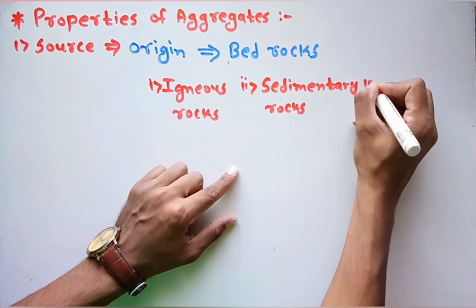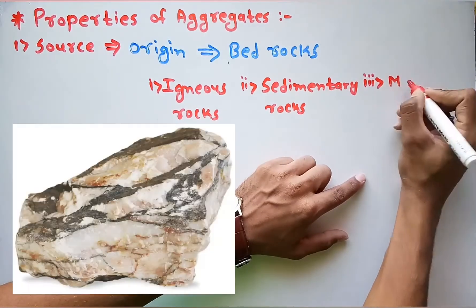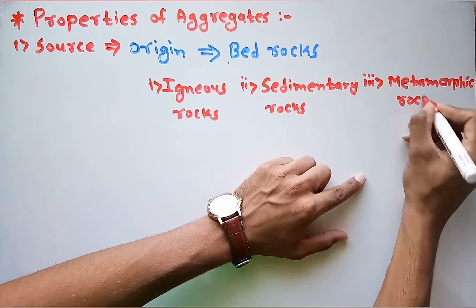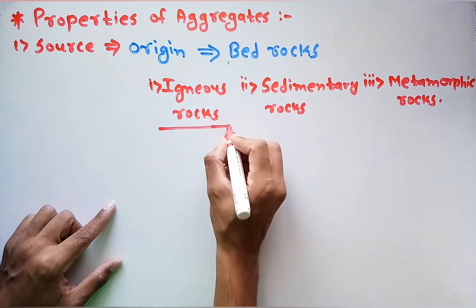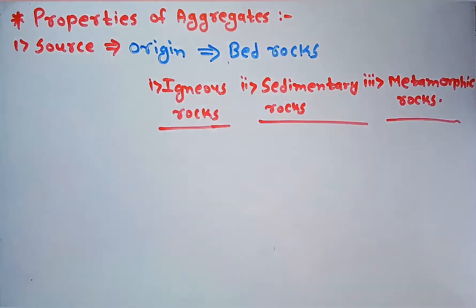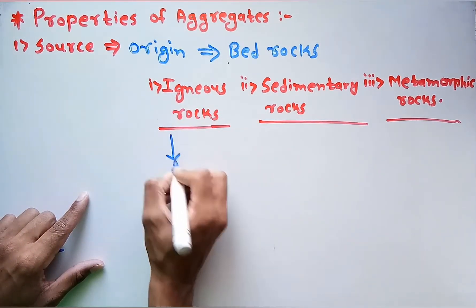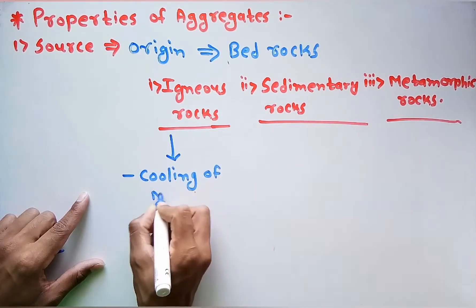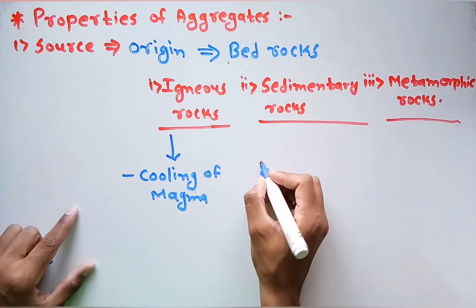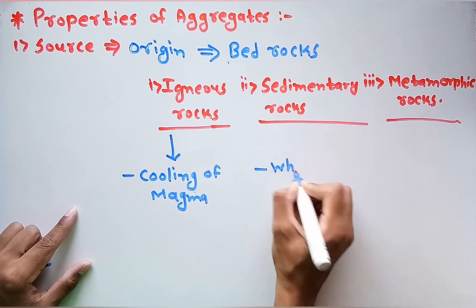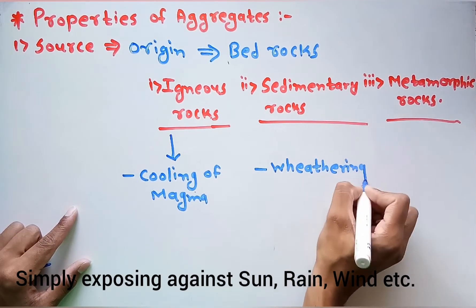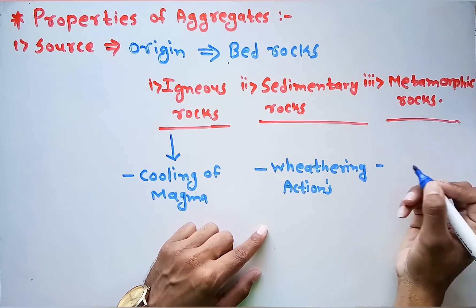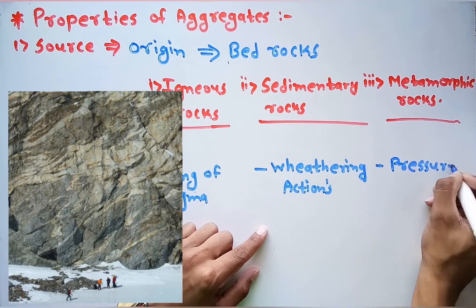Igneous rocks are formed due to cooling of magma. Sedimentary rocks are formed due to weathering actions. Metamorphic rocks are formed due to pressure and heat.